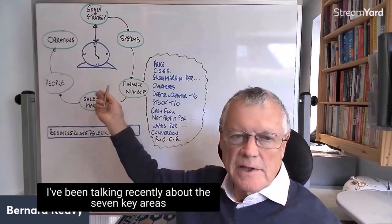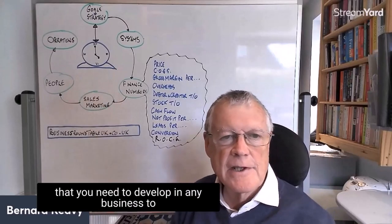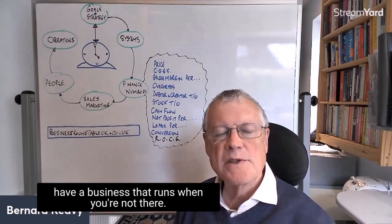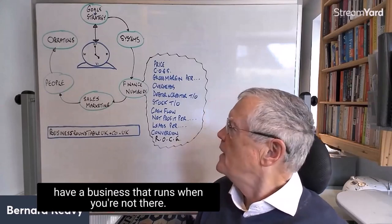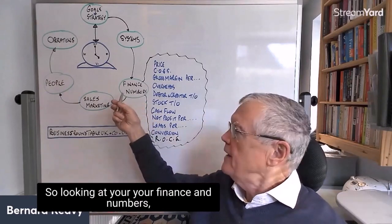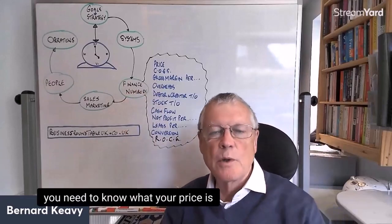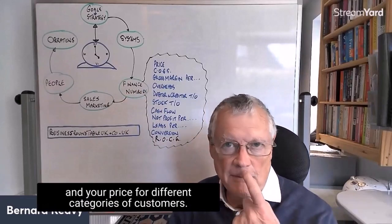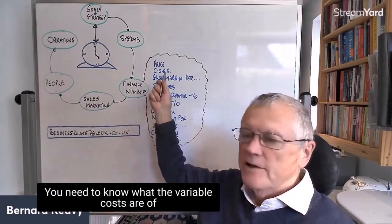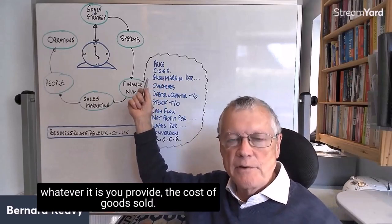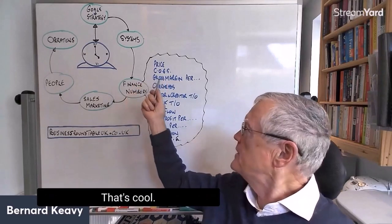I've been talking recently about the seven key areas that you need to develop in any business to have a business that runs when you're not there. So looking at your finance and numbers, you need to know what your price is and your price for different categories of customers. You need to know what the variable costs are of whatever it is you provide — the cost of goods sold, that's called.